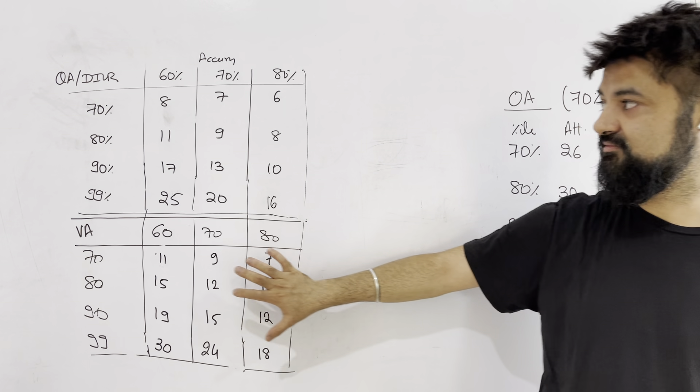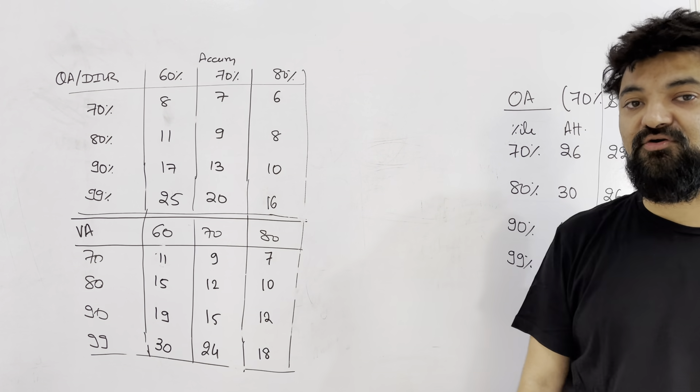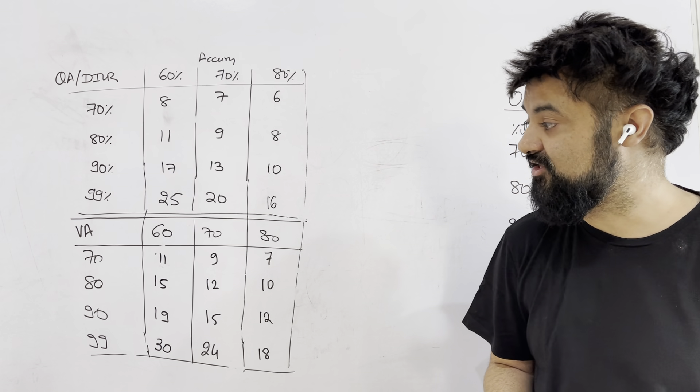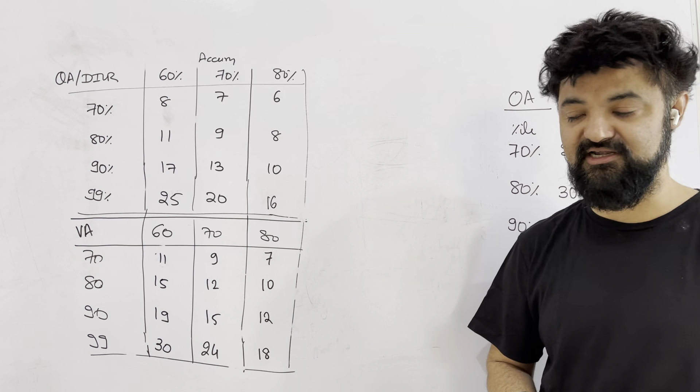Same way for the verbal. Verbal means, normal accuracy is lower. So 60 and 70, you have to look at depending on whatever accuracy you are getting. You have to look at the last 5 mocks to understand your accuracy and then make a chart. Then look at that number.